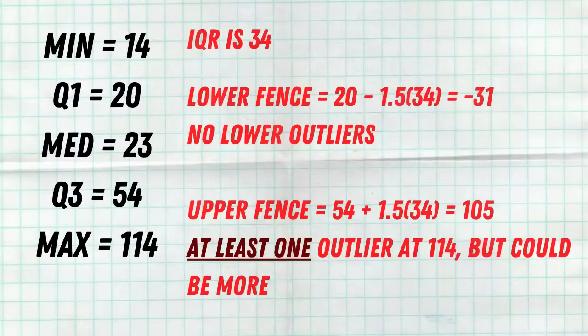It's also important to know that if all you have is the five number summary — the min, max, Q3, Q1, and the median — you can use the upper and lower fence method to find those fences, but the problem is you only know your min and your max. So you can determine if the max is an outlier if it's bigger than the upper fence, but there could be more outliers you just don't know because you don't have all your individual values. You have to word it carefully: there is at least one outlier at the max, but there could be more. Same thing if your min is lower than the lower fence — definitely an outlier, but there could possibly be more.